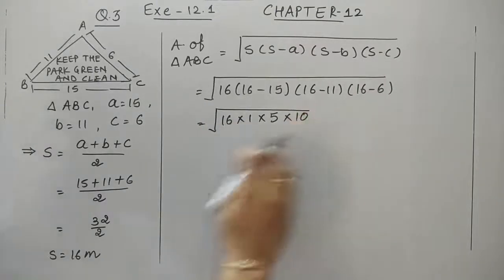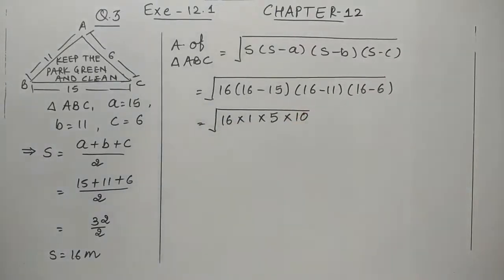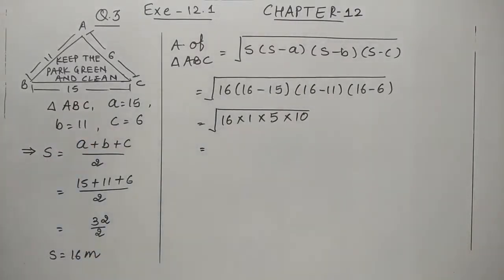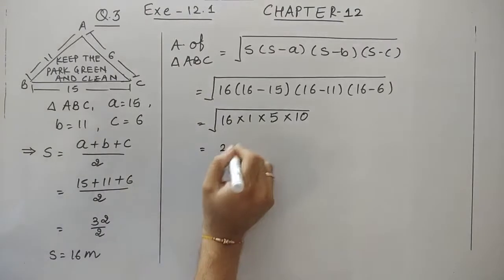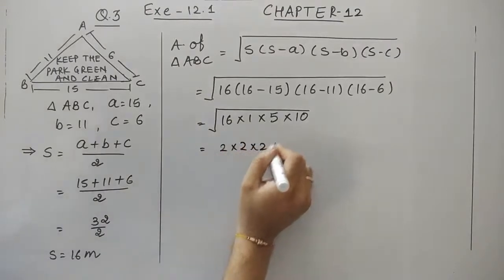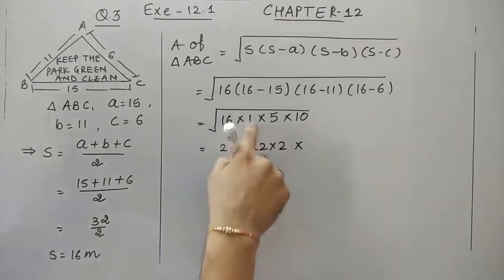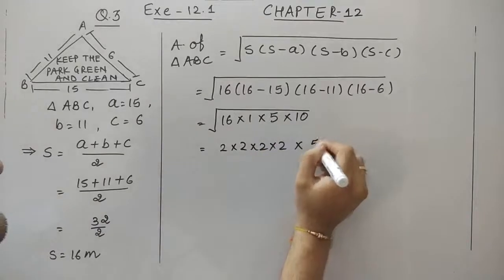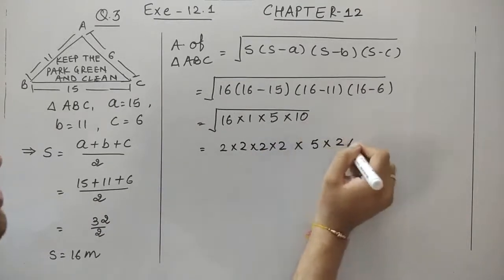Students, we can see that 16 is already a square of 4. Even if you don't use prime factors, it doesn't matter. We can keep the same method. The factors of 16 are 4 times 4, which is 2 to the power 4. And 10 is 2 times 5.